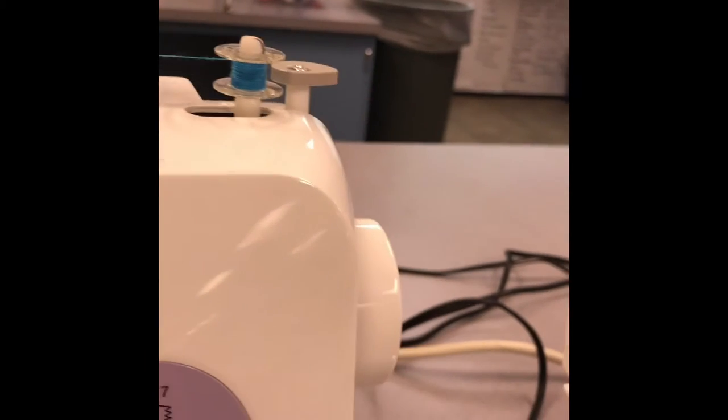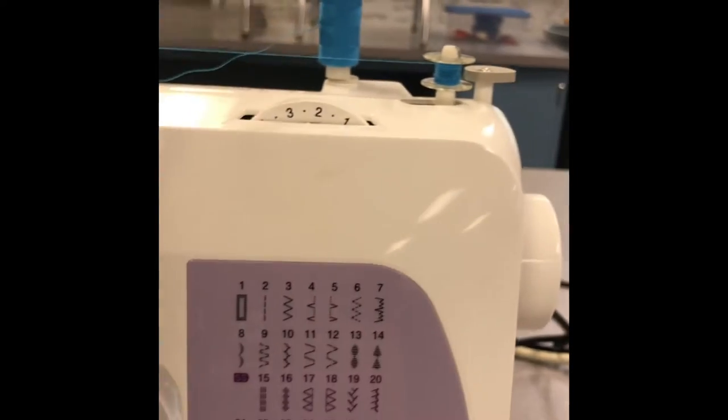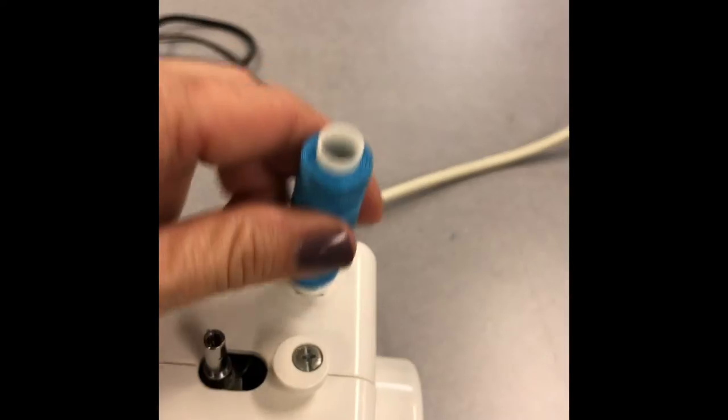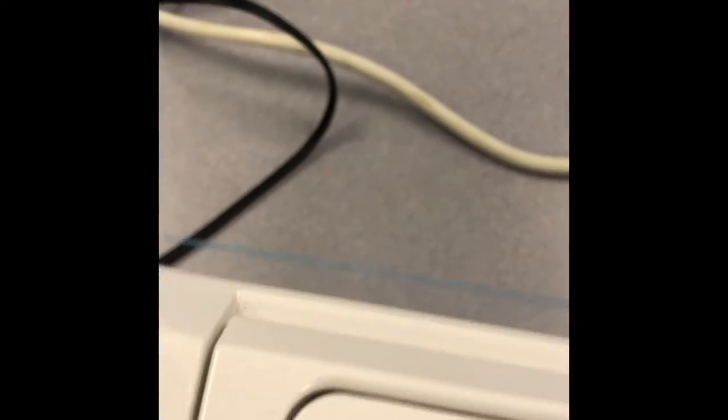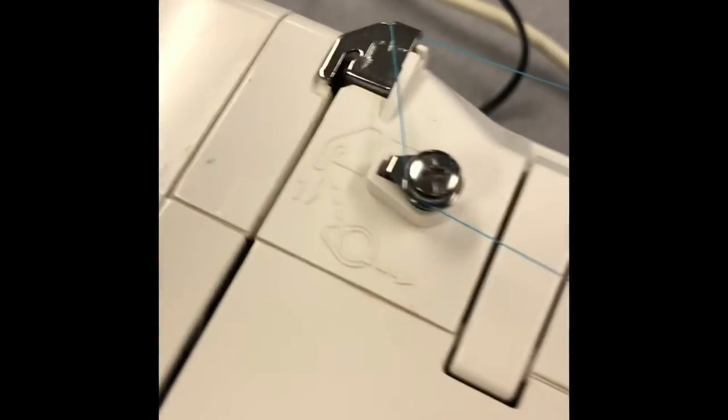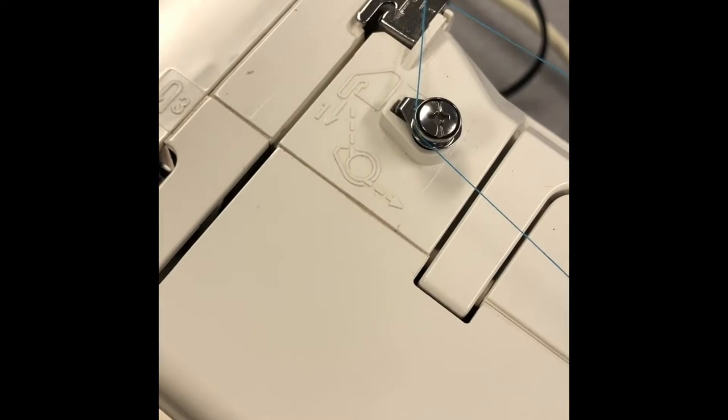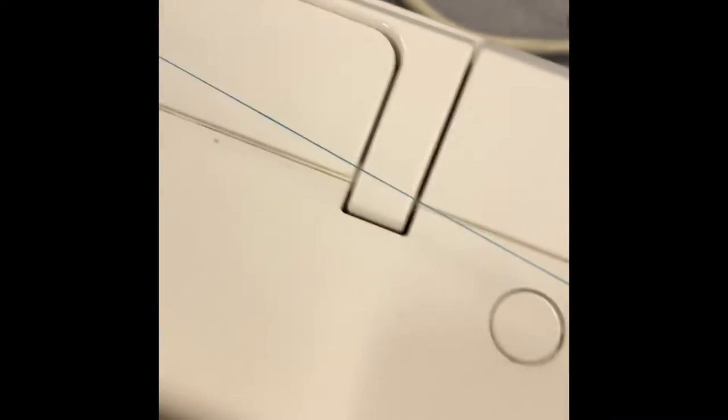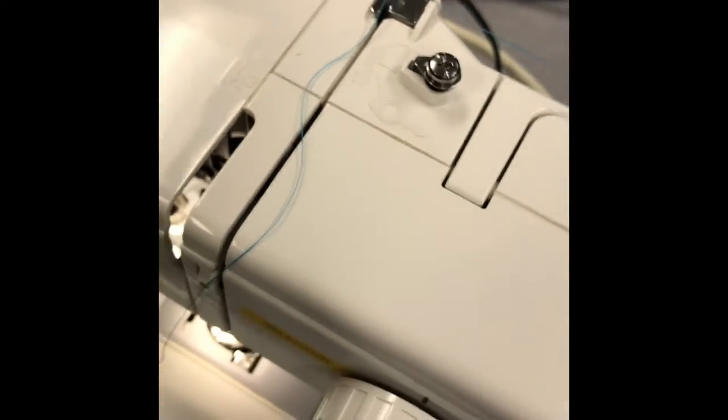On this other machine, I'll show you what to do with the thread. It's showing that we just need to come up from behind this and then over to our bobbin. We'd bring it this way, and then we would wrap it around the bobbin right there. That's the only difference between these two machines.